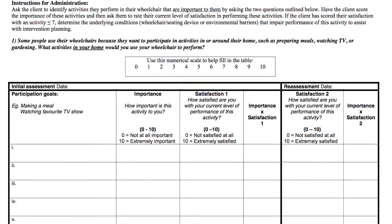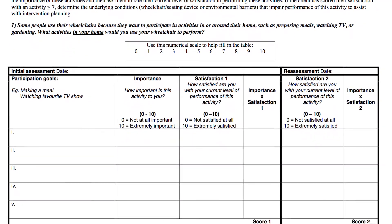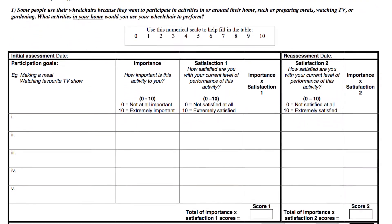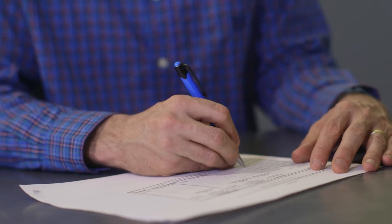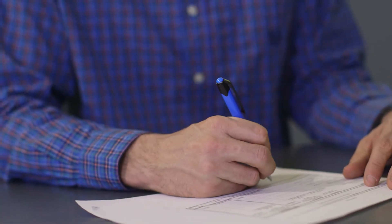You can use the Wheelchair Outcome Measure whenever you want. Oftentimes you'll use it when there's a change that's anticipated. So if someone's looking for a new wheelchair, you'll want to get baseline information on that person, and then when you give them the new device you can evaluate it.